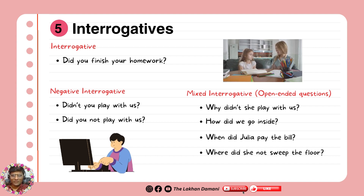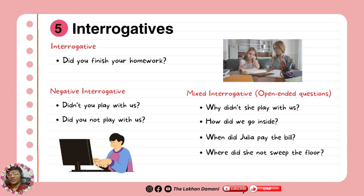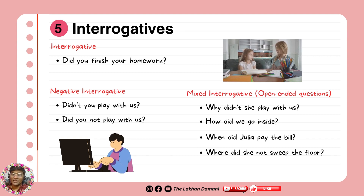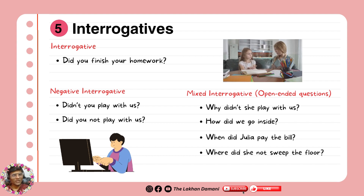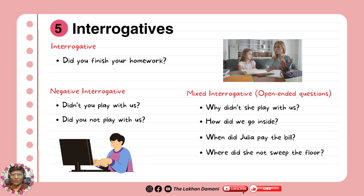In part five, we have open-ended questions — this is very important. Open-ended questions require more context to give an answer, encouraging someone to speak more. For example, why didn't she play with us? — you can't just say yes or no; you have to give a fuller answer. How did we go inside? When did Julia pay the bill? Where did she not sweep the floor? — you're asking about a specific kind of location. These questions all require different types of context.